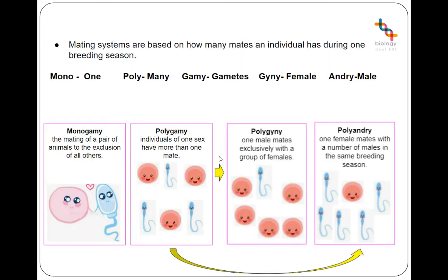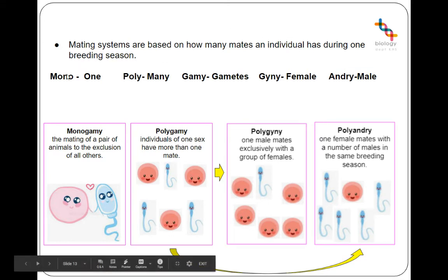When we look at mating systems in animals, there are four key terms. Monogamy: 'mono' means one — a mating pair that mates exclusively within a single breeding season. So in 2021 this is a monogamous pair, but in 2022 the female can find a different monogamous partner. Polygamy or polygyny: individuals of one sex have more than one partner. If males have multiple female partners it's called polygyny; if females have multiple male partners it's called polyandry.